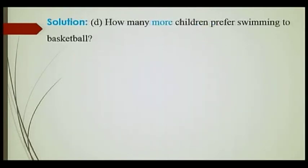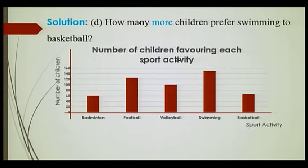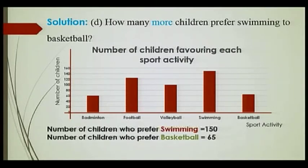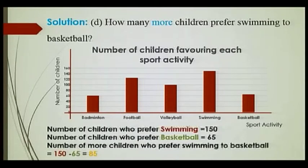Part D: How many more children prefer swimming to basketball? From the bar chart, we have 150 students who like swimming and 65 who like basketball. So it's going to be 150 minus 65 — that is, 85 children who prefer swimming to basketball.